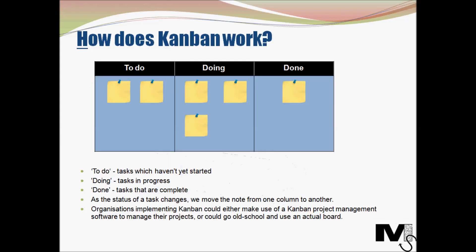How does Kanban work? Kanban is essentially a non-disruptive change management system. This means we map out existing processes and make gradual improvements to them without making drastic changes to the whole process. Since Kanban is a visual system, the first step is to visualize the process. This can be done by a simple white or blackboard outlining tasks and marking them as to-do, in progress, or done, as shown in the graphic here.